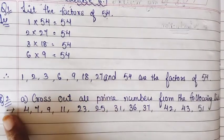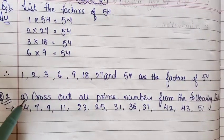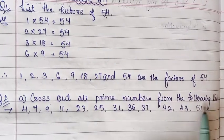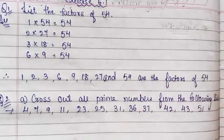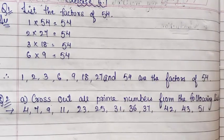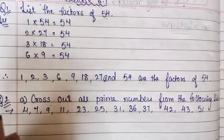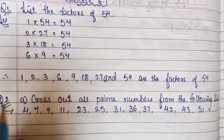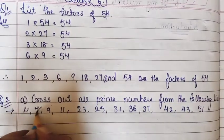Now we will go to Question number 2. In question number 2 there are sub-questions. Part A: Cross out all prime numbers from the following list. From that list we have to cross out all the prime numbers. We will use a pencil to cross them out. Now 4 — is 4 a prime number or a composite number? 4 is a composite number because it comes in the table of 2.